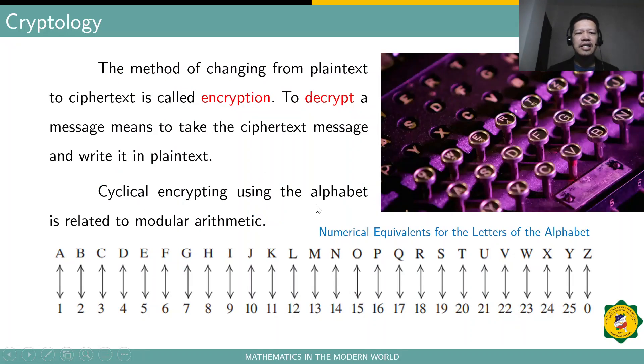Cryptology is a method of changing from plaintext to ciphertext. And that process is actually called encryption. And decryption means to take the ciphertext message and write it in plaintext. So, encryption is the process of encoding the plaintext. And decryption is the process of deciphering or decoding the ciphertext so that it will become a plaintext and can be read by the recipient or the receiver.